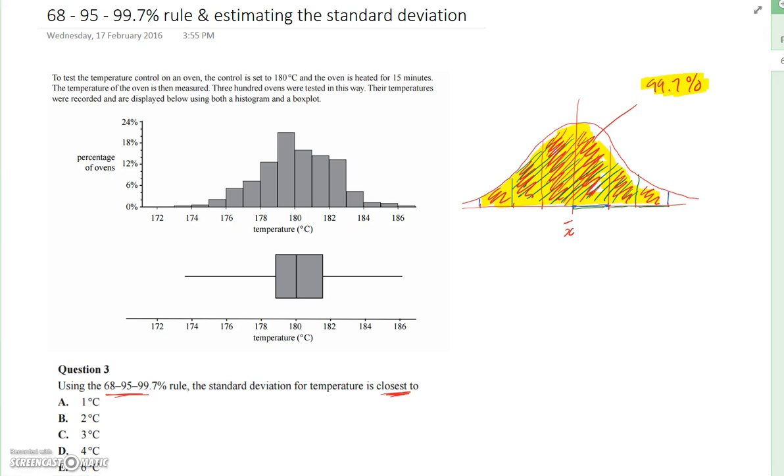Those parts are all equal. That length there is that length, which is that length. So in total there are six equal parts, which cover 99.7% of the data.